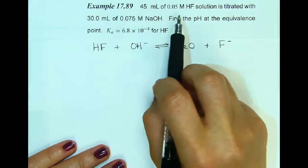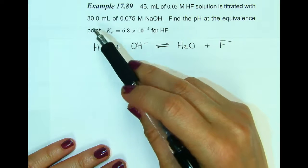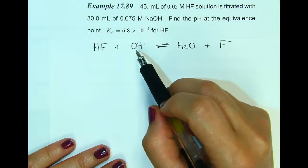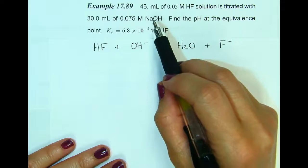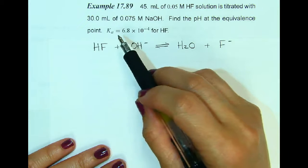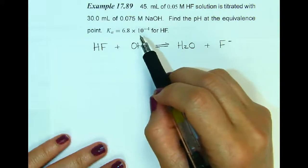45 milliliters of a 0.05 molar hydrofluoric acid solution is titrated with 30 milliliters of a 0.075 molar sodium hydroxide solution. Notice I only put the hydroxide and I left out the spectator ion sodium. Find the pH at the equivalence point if the Ka of hydrofluoric acid is 6.8 times 10 to the negative 4.